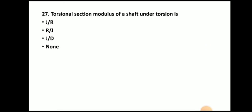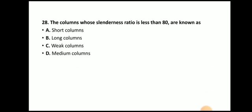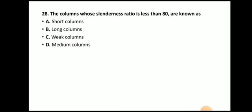Next question: torsional section modulus of a shaft under torsion is J/R. Next question: a column whose slenderness ratio is less than 80 is known as a short column. These are 28 important questions related to torsion. I have prepared a playlist of mechanics of materials covering objective questions on every unit — please visit my channel and that playlist. Thank you.